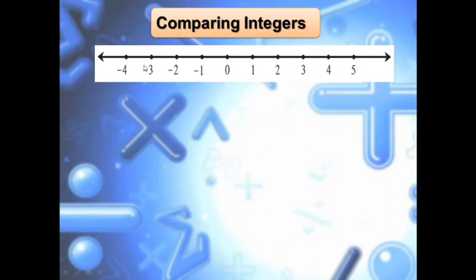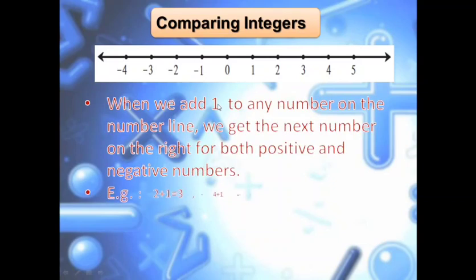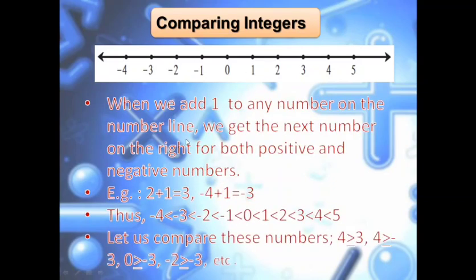This is the number line showing positive integers on the right and negative on the left, with 0 in the middle. Keep in mind a rule: when we add 1 to any number on the number line, we get the next number on the right, for both positive and negative numbers. For example, 0 plus 1 is 1; 1 plus 1 is 2; 2 plus 1 is 3; 3 plus 1 is 4, and so on. If I come to the left: minus 1 plus 1 is 0.